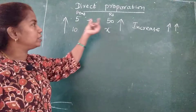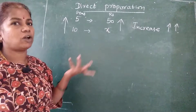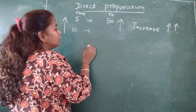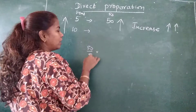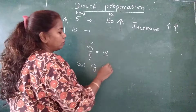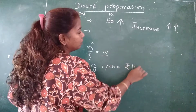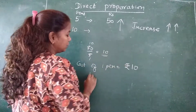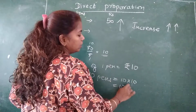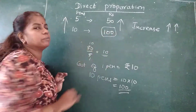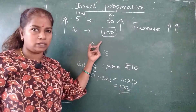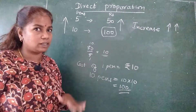So: 5 pens cost 50 rupees. 10 pens will cost how much? 50 divided by 5 equals 10. So cost of 1 pen is equal to 10 rupees. Cost of 10 pens will be equal to 10 into 10, which is equal to 100 rupees. When the quantity increased, the price also increased. This is the unitary method which we studied in 6th standard.